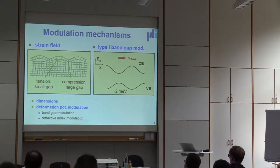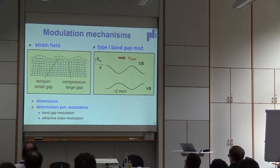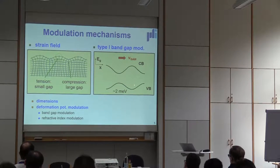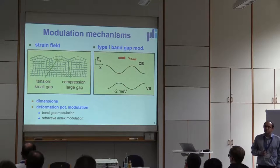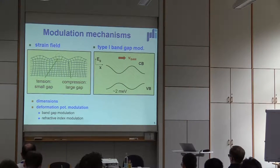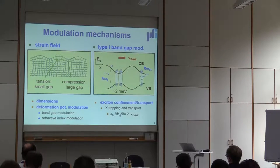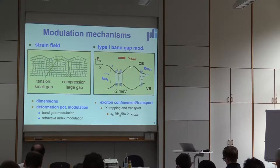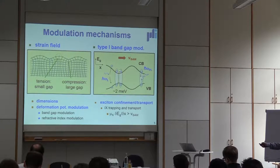The kind of modulation profile you get from the strain normally gives you modulation of the conduction band and valence band that resembles a type-1 modulation — minima and maxima at different positions. For the typical acoustic waves we use, the amplitude of the modulation is on the order of a few meV. This band gap modulation allows us to confine excitons: if you create excitons, they go to positions of minimal energy and are stored there. If this modulation moves, we also expect the excitons to move with the modulation.